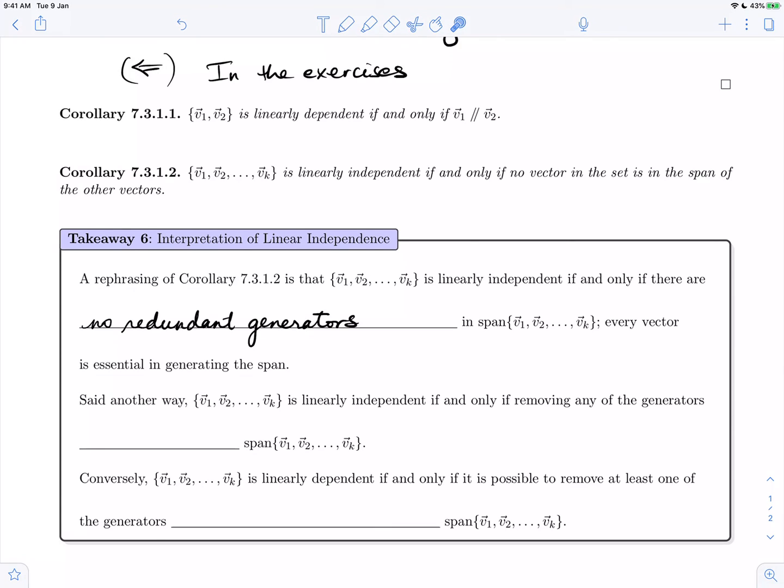Said another way, the set v1 through vk is linearly independent if and only if removing any of the generators changes the span.